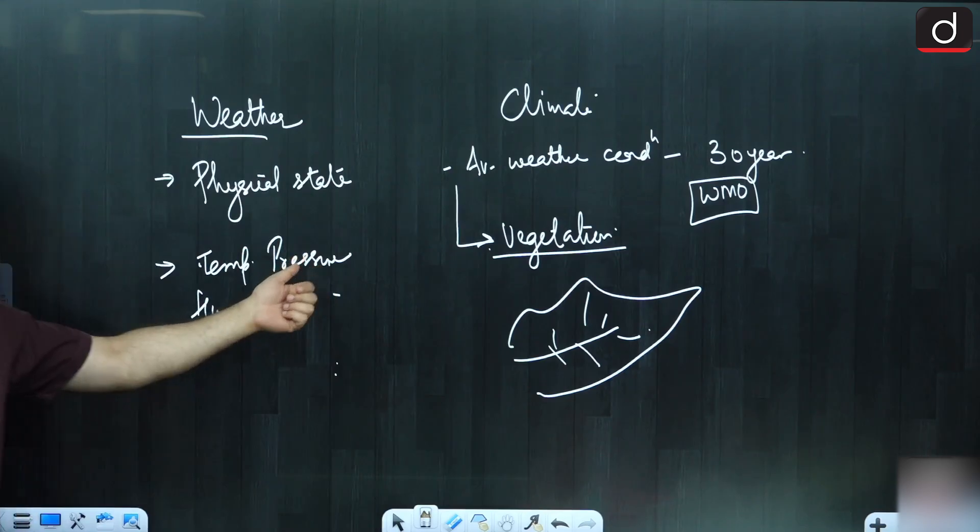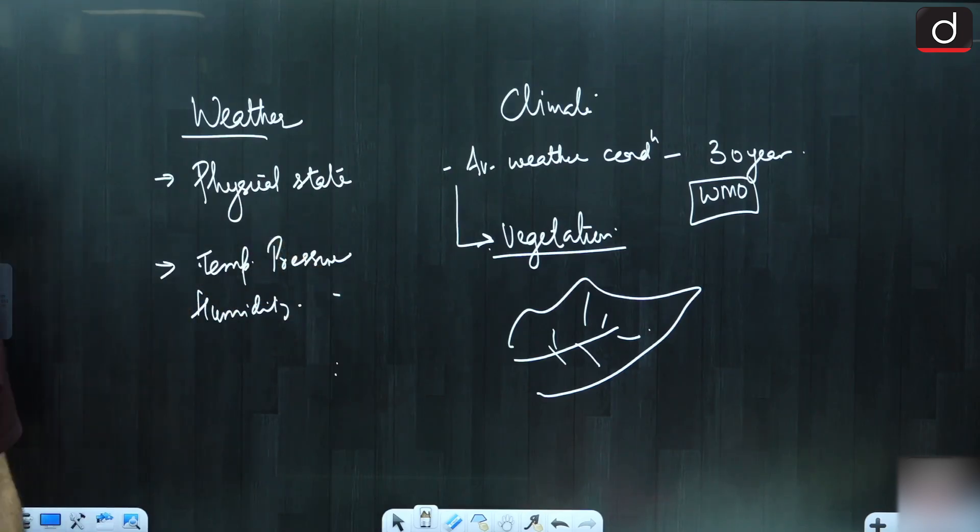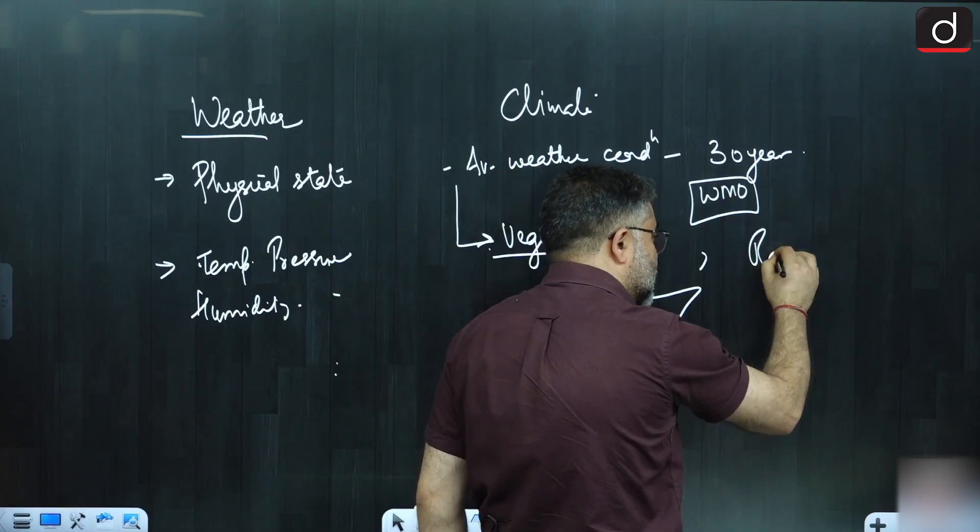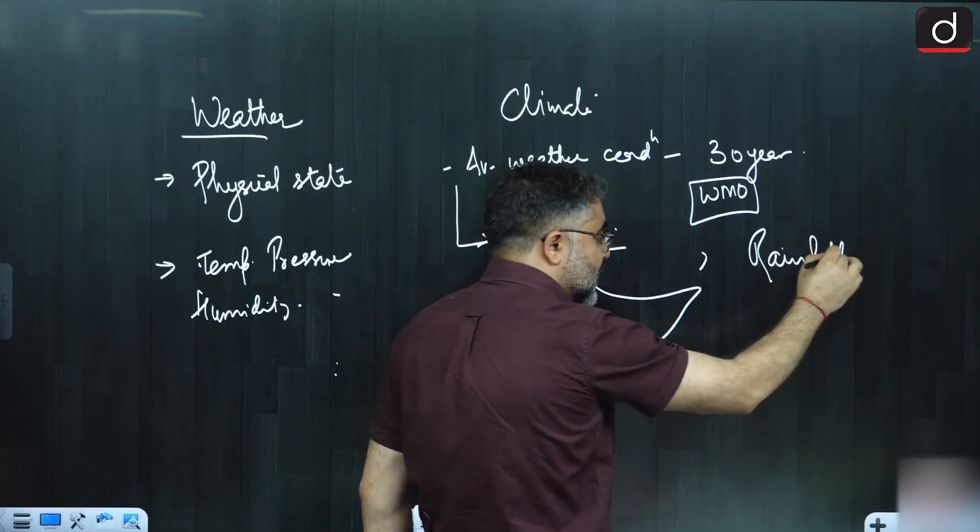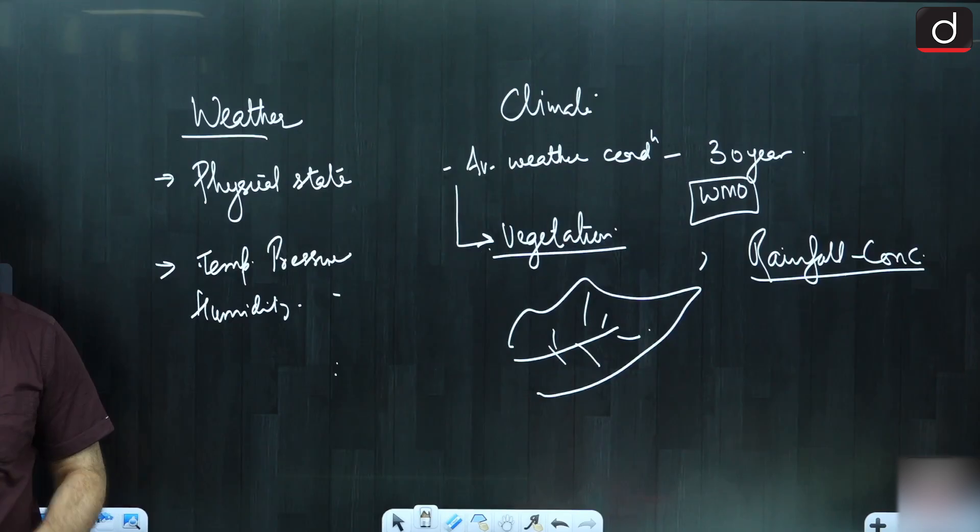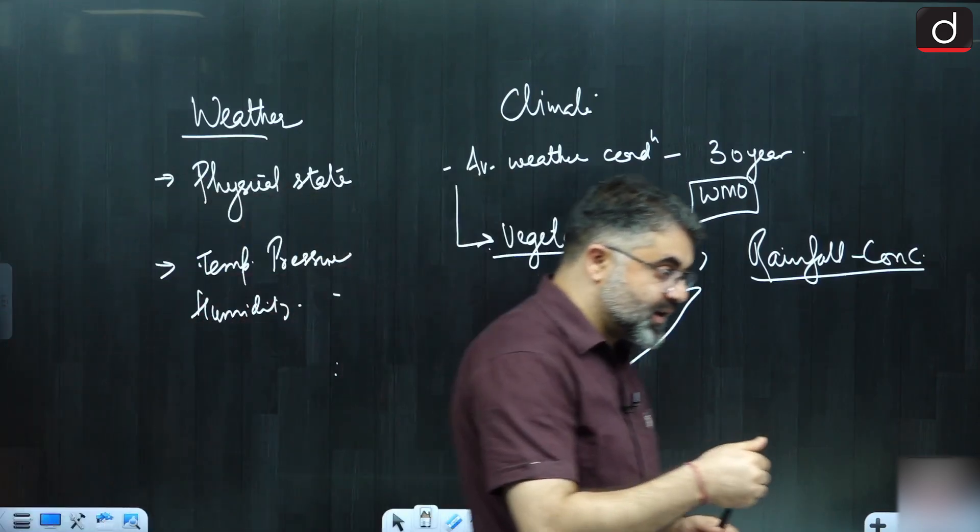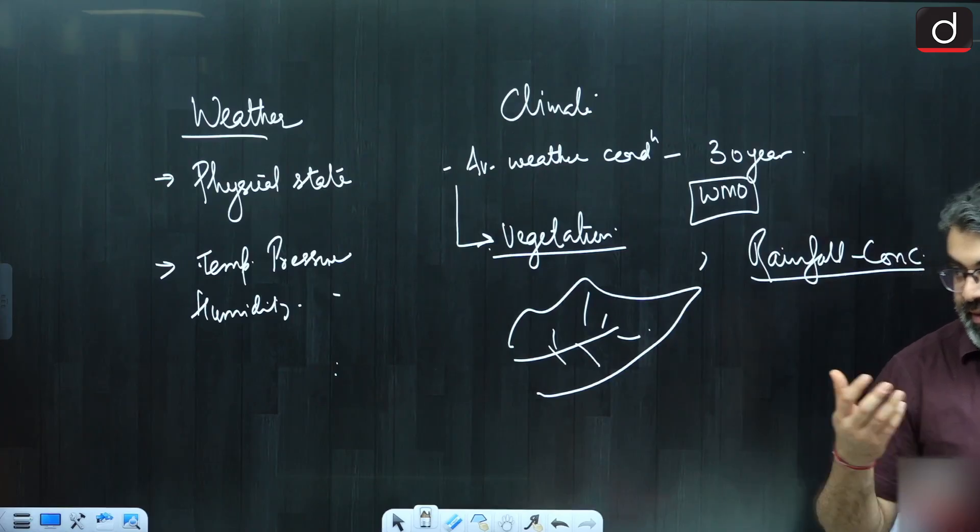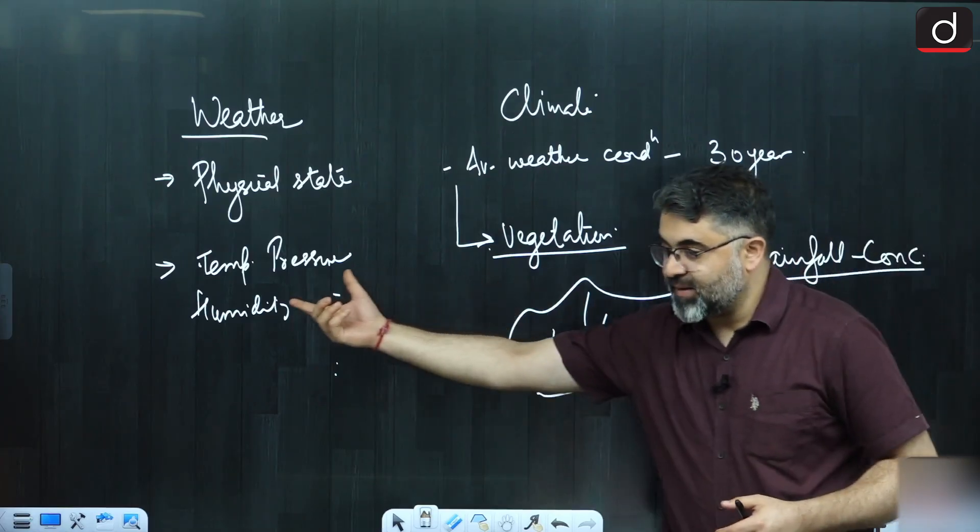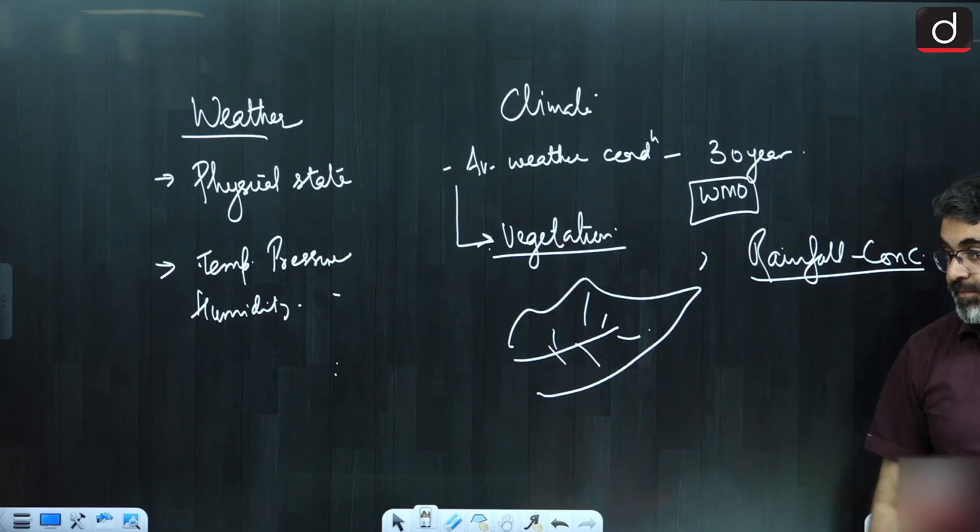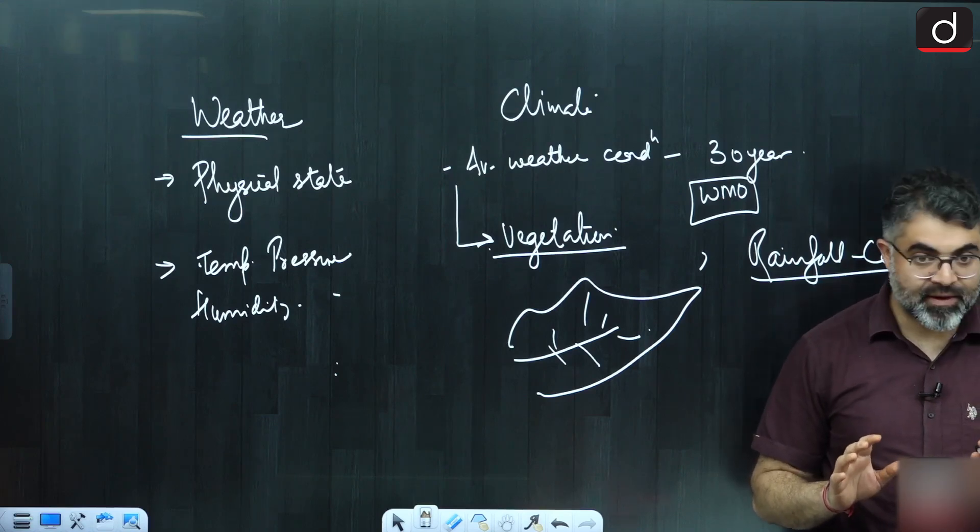If I have to study weather, then focus will be on temperature, precipitation and all that. For vegetation, besides vegetation, to define climate, what we will be looking at - not just the rainfall, but rainfall concentration. It is not about kitna baarish ho raha hai, not that. We will look at whether the rainfall is higher during summers or rainfall is higher during winters or rainfall is not at all taking place. In weather you study temperature, humidity, precipitation. In climate you are looking at concentration of rainfall, which season has more rainfall. That will determine its climatic conditions.